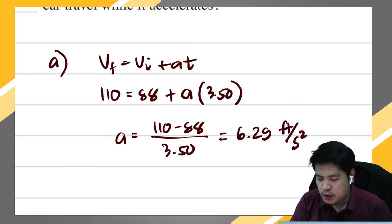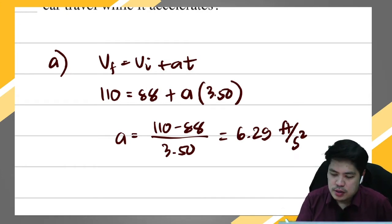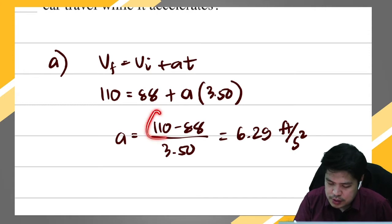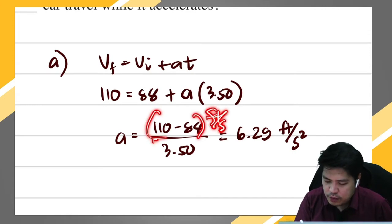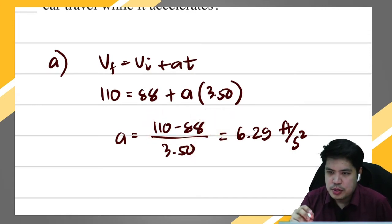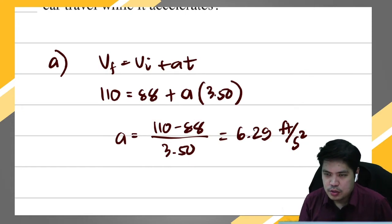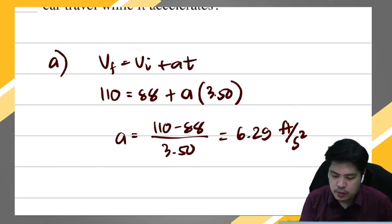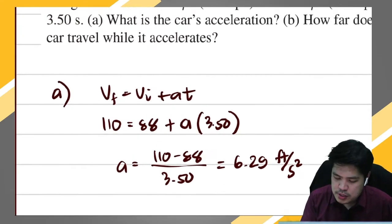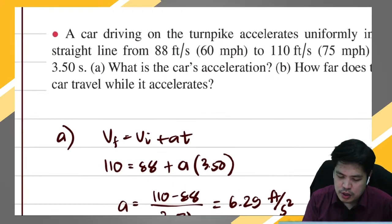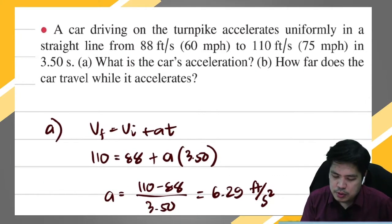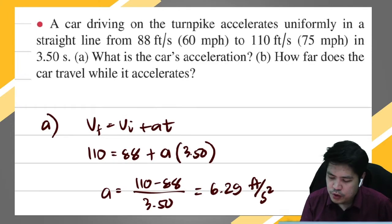The unit is feet per second per second, or feet per second squared, because feet per second divided by seconds gives feet per second squared. So our answer for letter a is 6.29 feet per second squared. That's very easy.